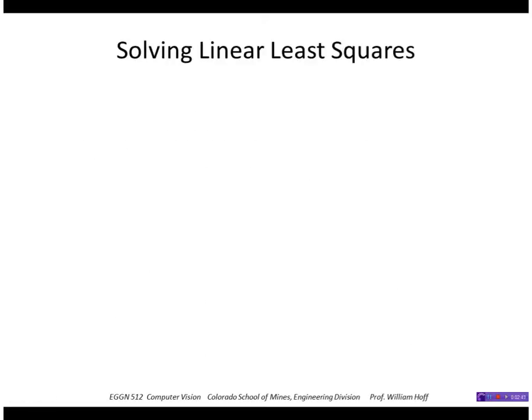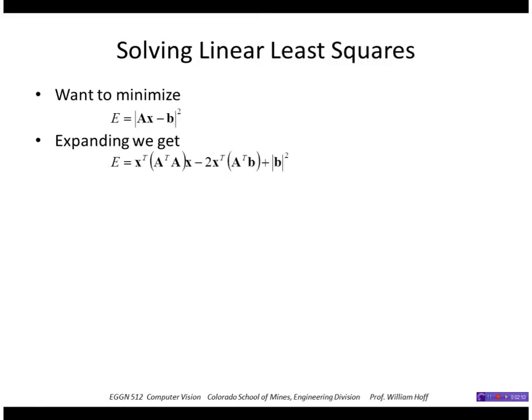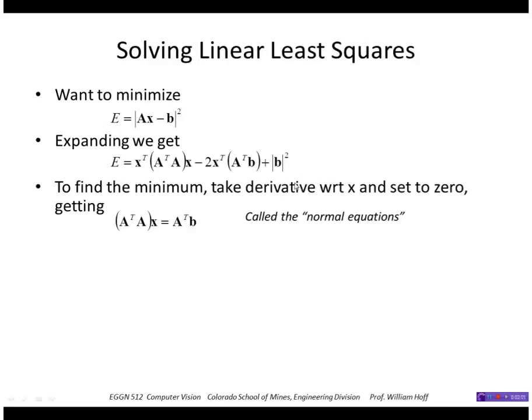To solve a linear least squares problem we want to minimize this error AX minus B squared. So ideally that would be 0 if there was no noise. We expand that and using matrix multiplication we get this expression for E. So to find the minimum we take the derivative with respect to X and set equal to 0.